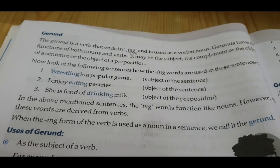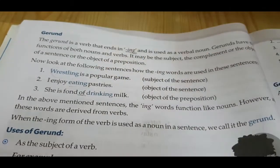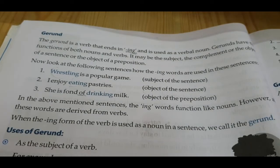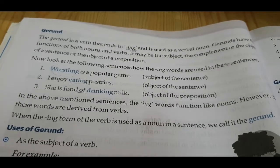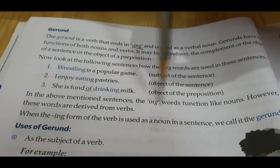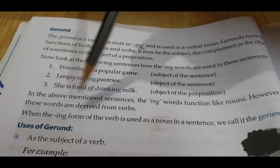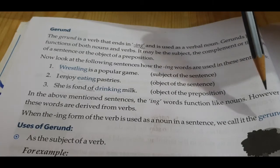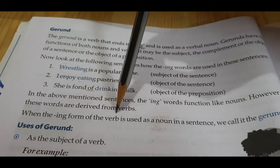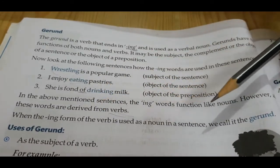'She is fond of drinking milk.' Drinking individually is a verb, but in this sentence it is used as a noun — as the object of the preposition 'fond of.' In the above-mentioned sentences, the -ing words function like nouns; however, all these words are derived from verbs. When the -ing form of a verb is used as a noun in a sentence, we call it a gerund.